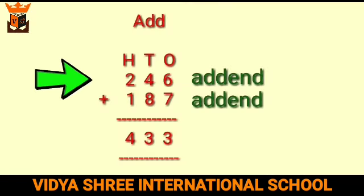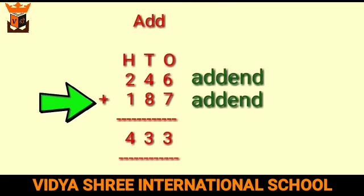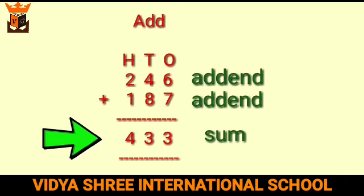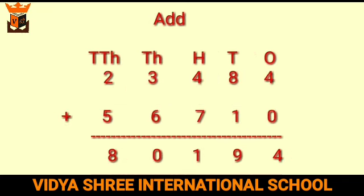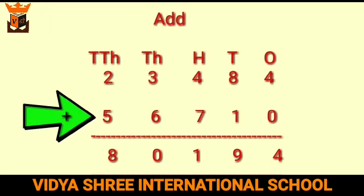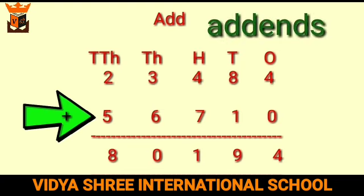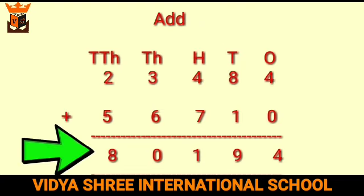We already know that the numbers we add are called addends and the answer we get after adding is called the sum. For example, 23,484 and 56,710 are addends, and after adding these two numbers we get 80,194, which is known as the sum.